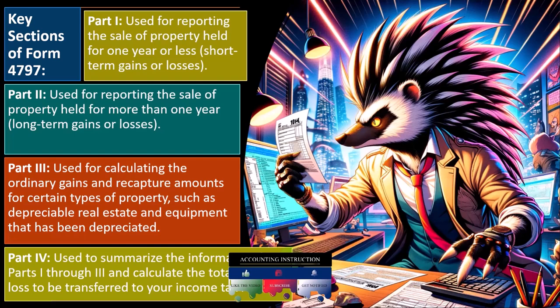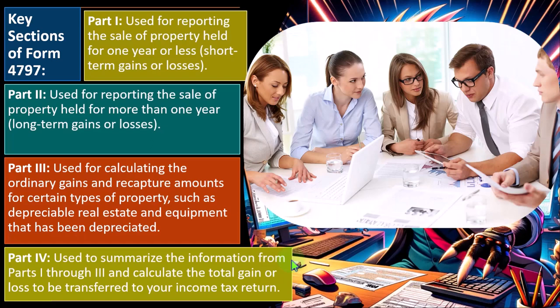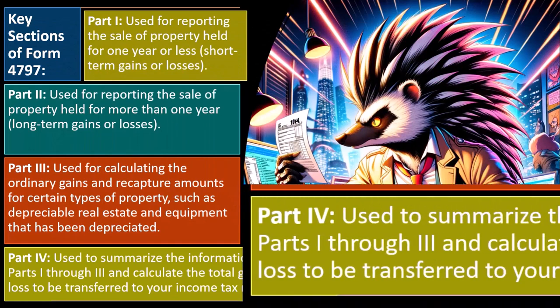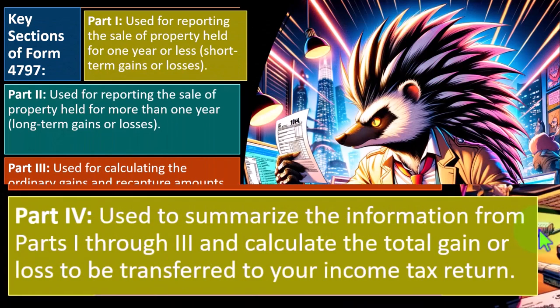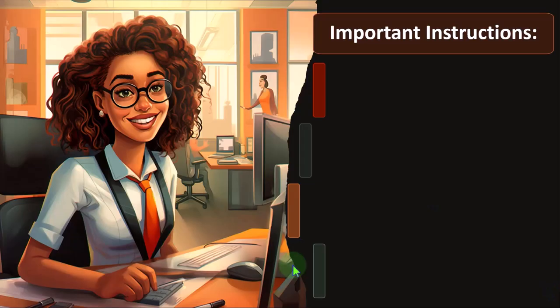You would think progressive tax rates, capital gains rates, and qualified dividends seem straightforward, but the rippling effects on tax planning can be significant — things add up and get complex over time because of the varying factors and moving landscape involved. Part 4 is used to summarize the information from Parts 1 through 3 and calculate the total gain or loss to be transferred to your income tax return.